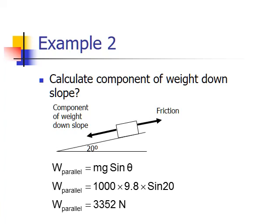Calculate the component weight down the slope. So mg sine theta, 1000, the mass of the car, times 9.8 times sine 20 gives us 3352 newtons.